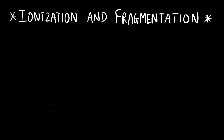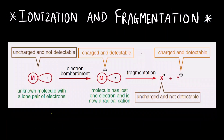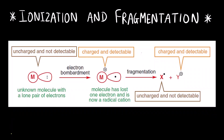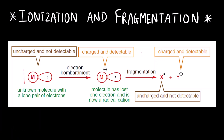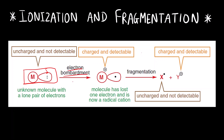Let us first start with ionization and fragmentation. Initially you can see here a compound — there will be a loosely bound electron pair called a lone pair. This molecule is uncharged and is not detectable, as I told you earlier, because only charged fragments are detected in the mass spectrum.